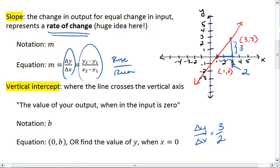Next we'll talk about our vertical intercept. A vertical intercept is the point where our line crosses the vertical axis or the y-axis. So it's about right here in the line that we have graphed.